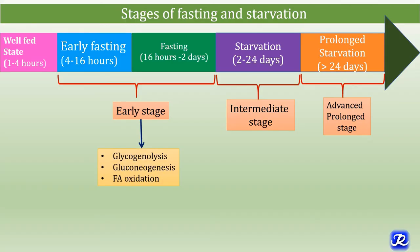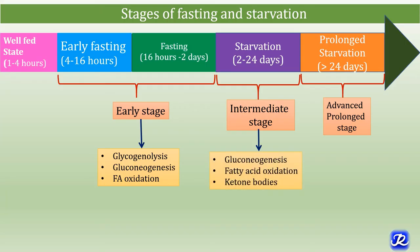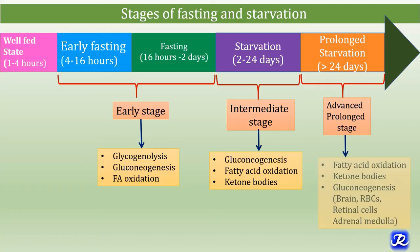The early stage is characterized by glycogenolysis and gluconeogenesis. The intermediate stage is characterized by gluconeogenesis, fatty acid oxidation, and ketone body synthesis and utilization. In the advanced stage, gluconeogenesis still continues to supply the exclusively glucose-dependent tissues like brain, RBCs, retinal cells, and adrenal medulla.